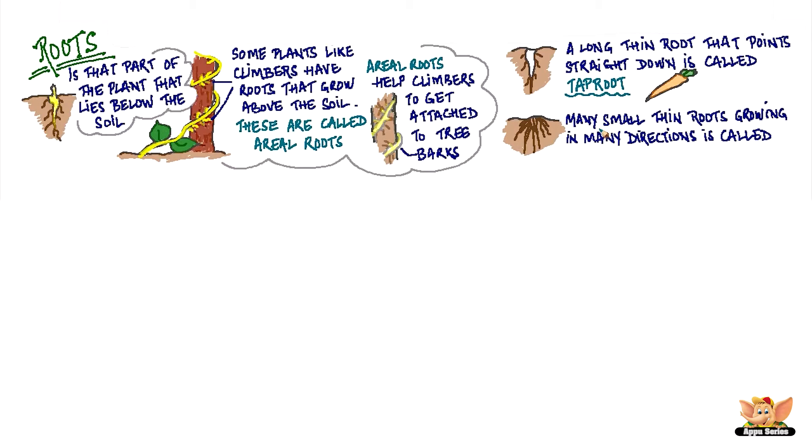Many small, thin roots growing in many directions is called fibrous roots. For example, grass.